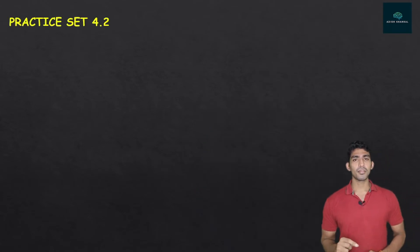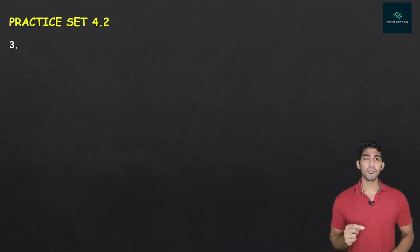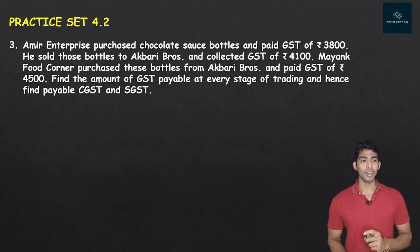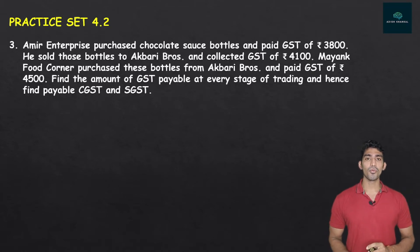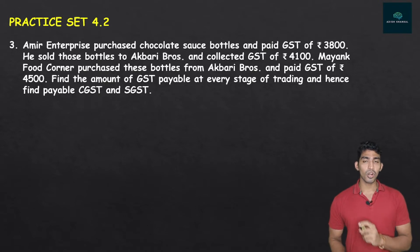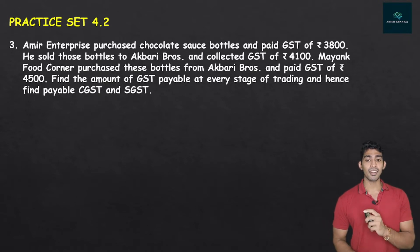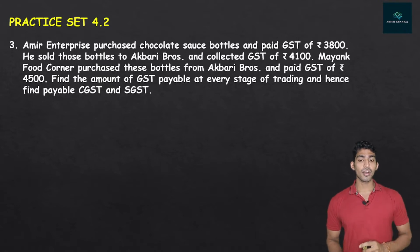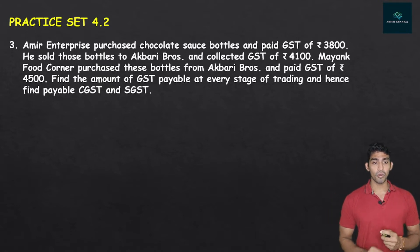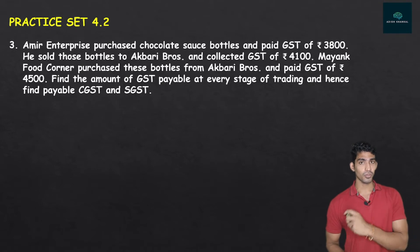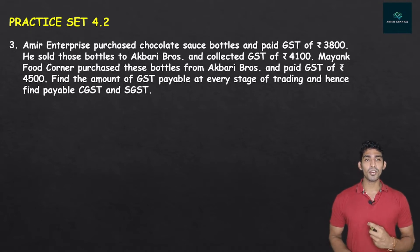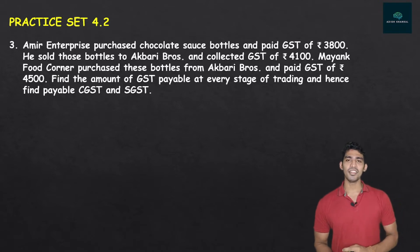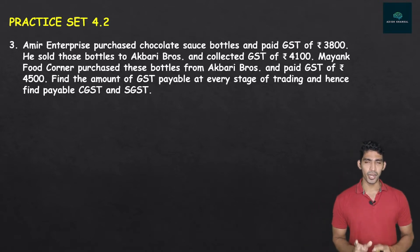The first question is Practice Set 4.2, Question 3. Amir Enterprise purchased chocolate sauce bottles and paid GST of Rs. 3,800. He sold those bottles to Akbari Brothers and collected GST of Rs. 4,100. Mayank Food Corner purchased these bottles from Akbari Brothers and paid GST of Rs. 4,500. Find the amount of GST payable at every stage of trading, and hence find the payable CGST and SGST.